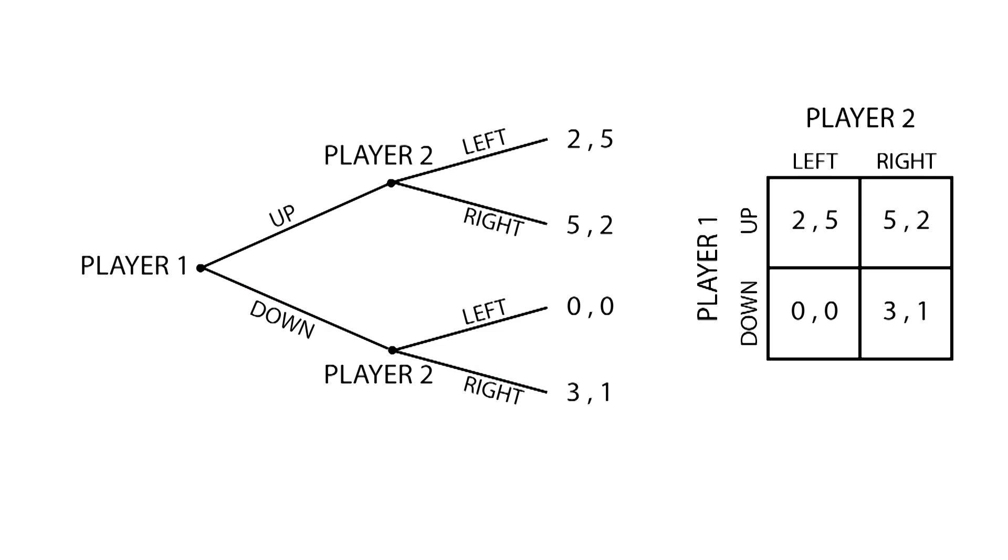Let's look for the Nash equilibrium of this game. Player 1 knows that player 2 will rather go left, since his expected payoff would be greater. Therefore, player 1 chooses to go left, since this will derive in a higher payoff.